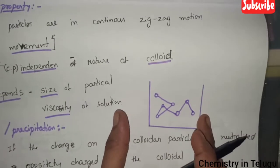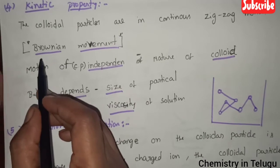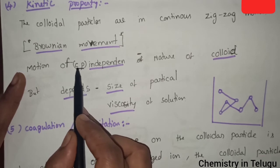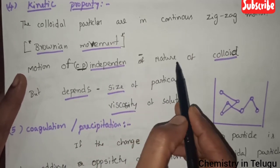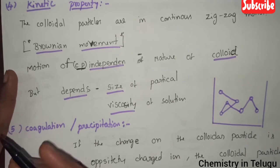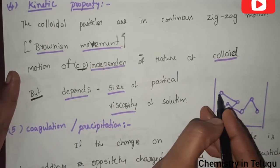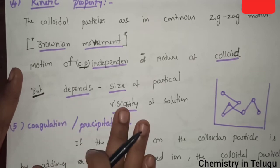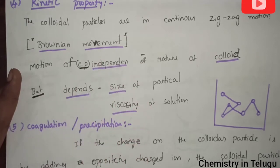In colloid solution, the colloid particles are in continuous zigzag motion — this is Brownian motion. The motion of the colloid particles is independent of the nature of the colloids. However, it is dependent on the size of the particle and the viscosity of the solution. This is the kinetic property of colloids.